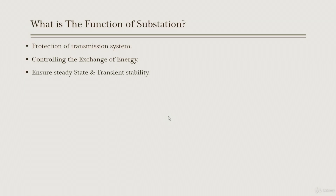The substation ensures steady state and transient stability — both very large and important fields. Steady state stability represents the stability of the power system when it supplies a constant amount of power. Transient stability represents the behavior of the system when disturbances happen — whether our system can sustain those disturbances or not — including load shedding and prevention of loss of synchronism.